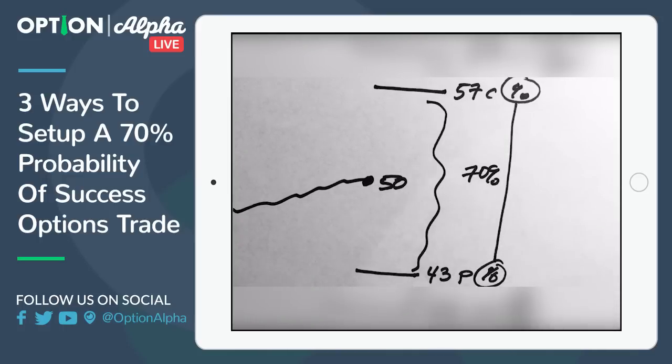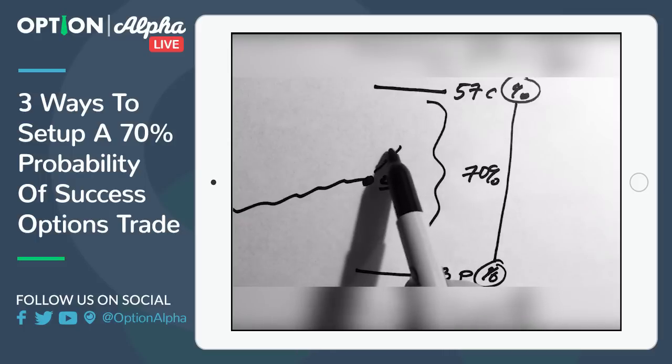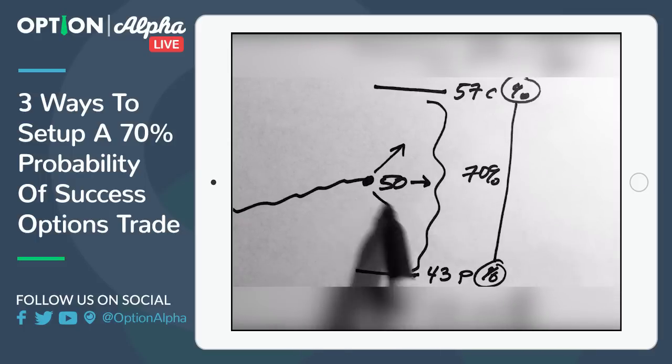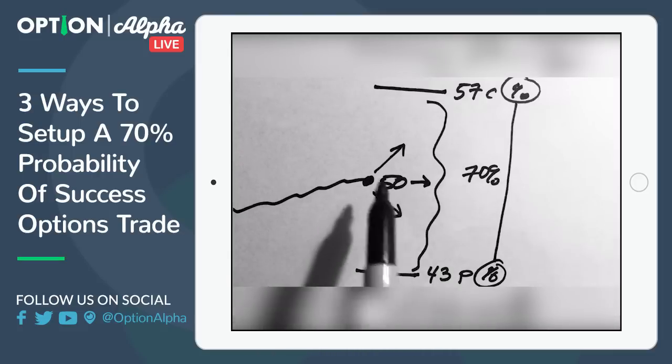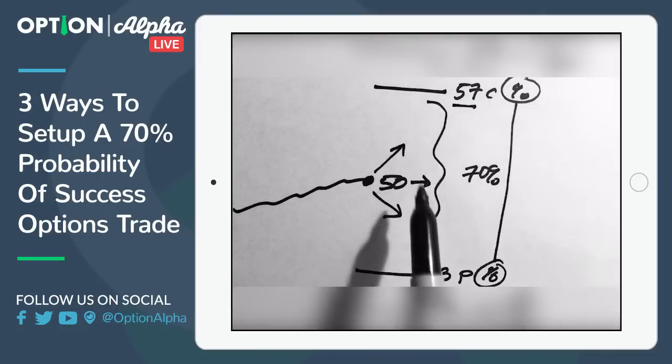So the whole idea here is that you can make a trade in any direction that you want. You can make a trade so that you win if the stock goes higher, if it goes sideways, if it goes lower, or you can just trade the whole thing neutral and say, I don't care where the stock goes as long as it's between 57 and 43, then I want to make money. And that's a strategy that you can build out. That's kind of the structure that we like to use here at Option Alpha is just to do most of our stuff kind of non-directional or neutral in trading.